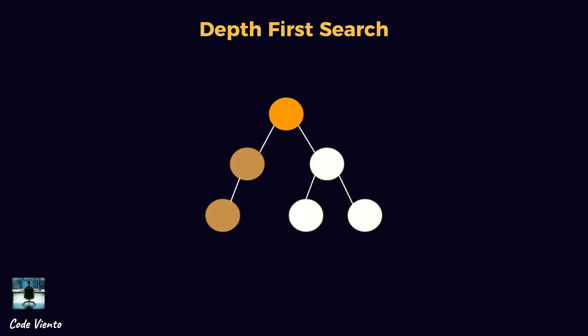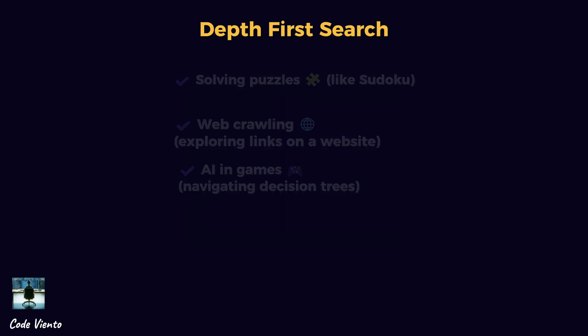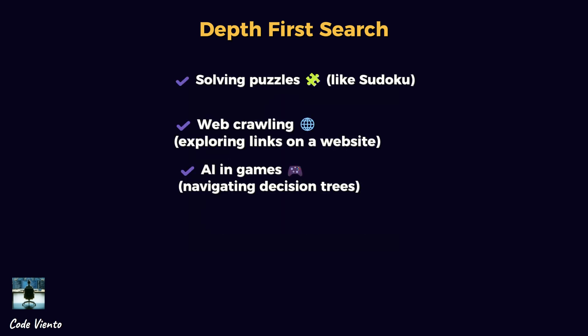Imagine a maze where you need to find any exit. Depth-first search takes one path all the way before trying another. It might not always find the shortest path, but it's useful when you just need any solution quickly. DFS is used for solving puzzles like Sudoku, web crawling (exploring links on a website), AI in games (navigating decision trees).